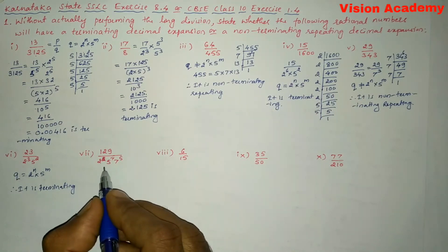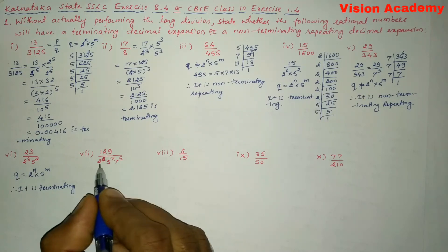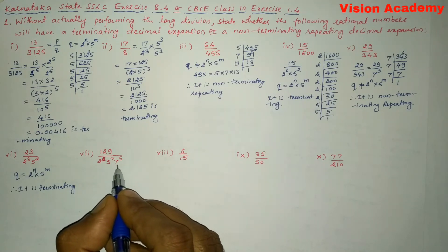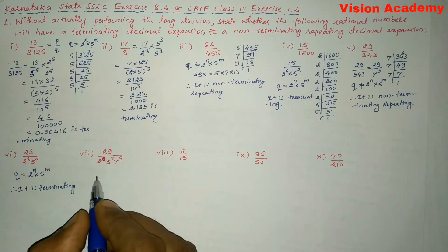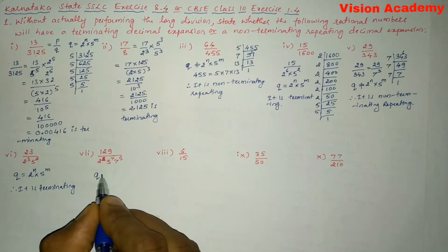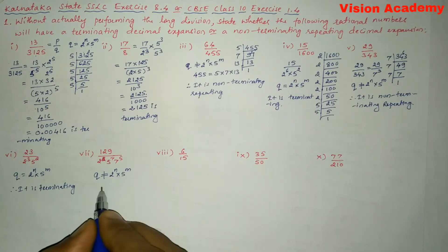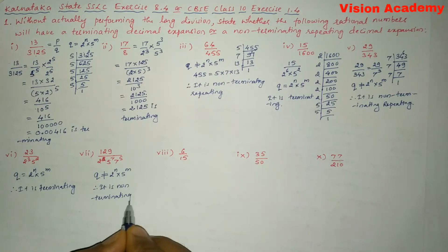Roman number seven: 129 divided by 2 to the power 2 into 5 to the power 7 into 7 to the power 5. Since the denominator is not in the form 2 to the power n into 5 to the power m — because of the factor 7 to the power 5 — it is non-terminating repeating.